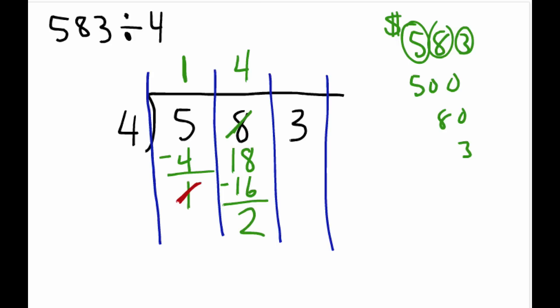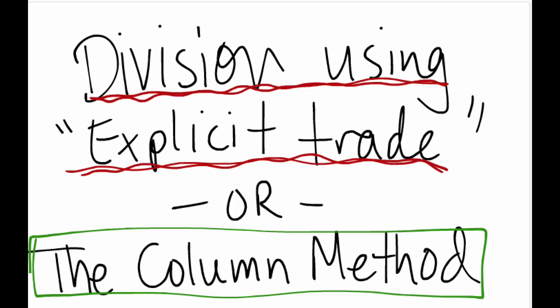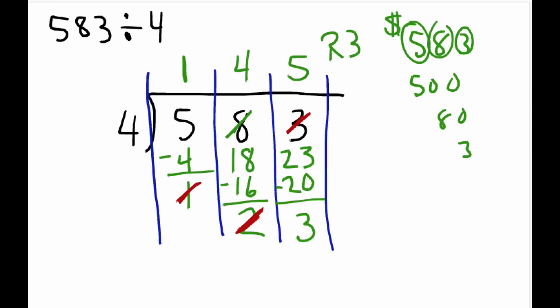So I'm going to take these 2 10 dollar bills and cash them in for 20 1 dollar bills. Plus the 3 1 dollar bills that we already have, means we now have 23 1 dollar bills. Those 23 1 dollar bills divided up amongst the 4 people means each person is going to get 5 1 dollar bills, leaving us with a remainder of 3 dollar bills left over. So our answer is 145 remainder 3, and that is the column method of division for 583 divided by 4.